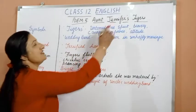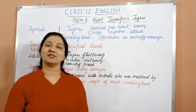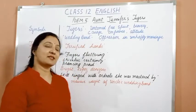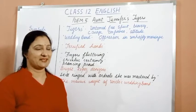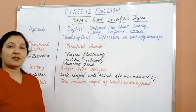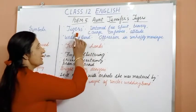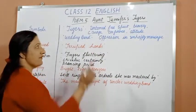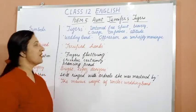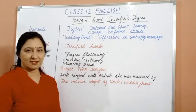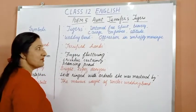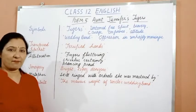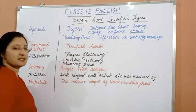Now let us move to the last poem, 'Aunt Jennifer's Tigers'. In this poem Adrienne Rich talks about the constraints faced by a woman in her married life. The poet uses two different symbols: tigers represent an untamed free spirit — symbols of bravery, courage, confidence, and attitude — while the wedding band symbolizes oppression in an unhappy marriage. Transferred epithet is used in 'terrified hands'.